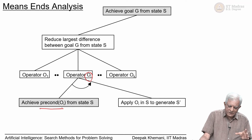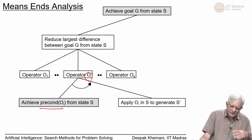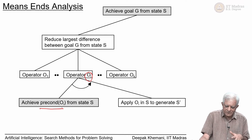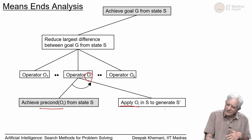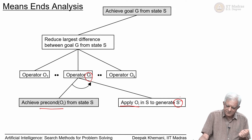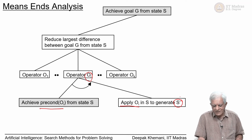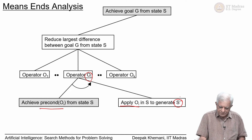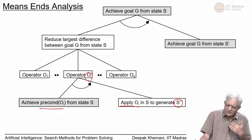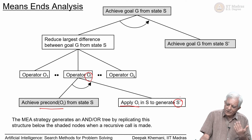Once you have achieved those preconditions — left as a grey box because it may not yet be completely done — the recursive structure would have taken care of it. Once you come back to the state where you have achieved the preconditions, you can apply O_i in state S to generate a new state S prime. You have now reduced the largest difference. Then you go back to your original problem and achieve goal G from this new state S prime.